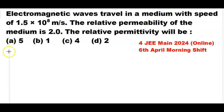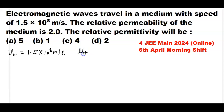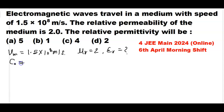The speed of light in the medium is given as 1.5×10⁸ meter per second. The relative permeability μr is given as 2, and we need to calculate the value of relative permittivity εr. The speed of light in air is equal to 3×10⁸ meter per second.